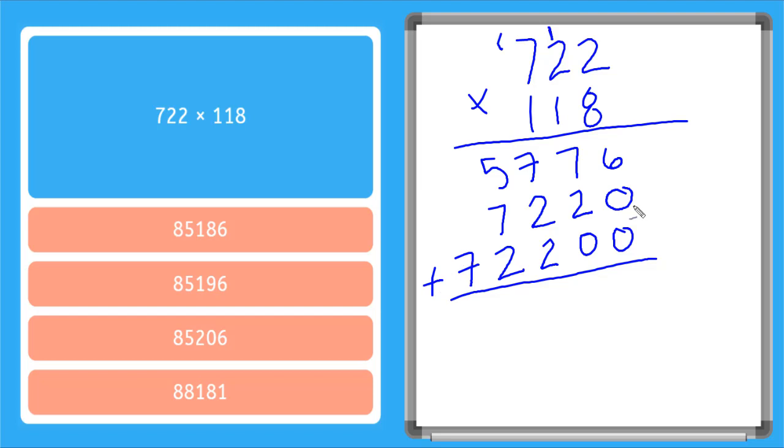Now I just add all of these here. Six plus zero is six, seven plus two is nine, seven plus two is nine, nine plus another two is 11. I carry that one. So now I have seven, eight, nine, ten plus five I know is 15, carry that one. Now seven plus one is eight. And there is my final number.